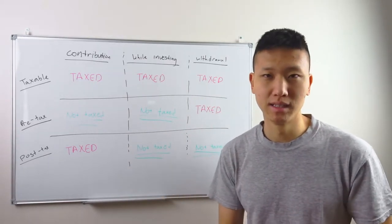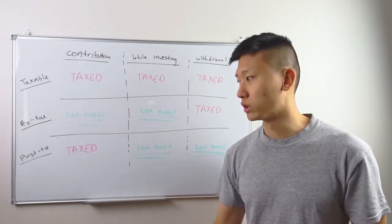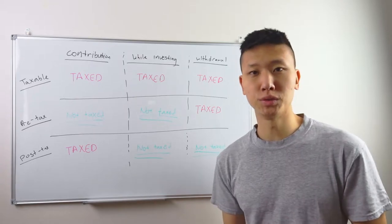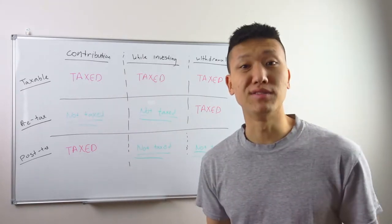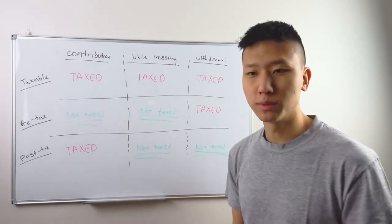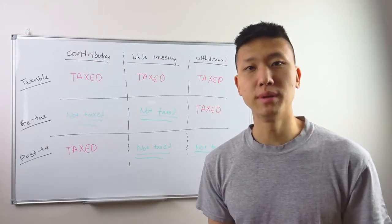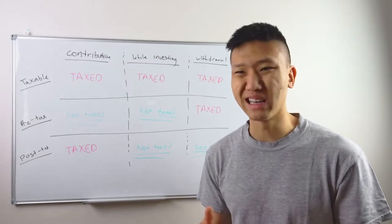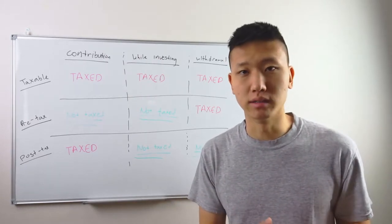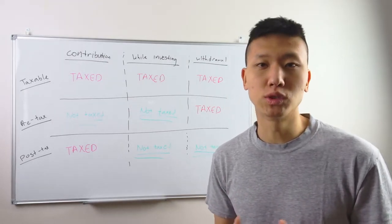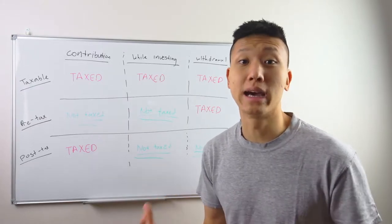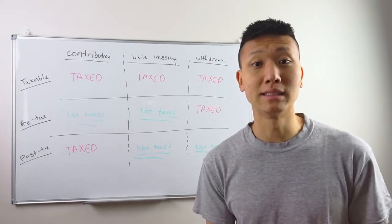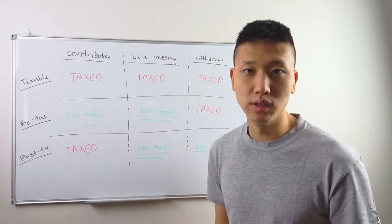Just because you want to invest in stocks doesn't mean you need a taxable account, and just because you want to do index funds doesn't mean you can only use post-tax or pre-tax. The things inside the vehicles can differ; it's just the vehicle that's different. Taxable accounts — anything related to Robinhood — have no age limit and no income limit. You just put money in and take it out whenever you like. But many people put taxable accounts at the last priority, wanting to avoid taxes in other vehicles first.